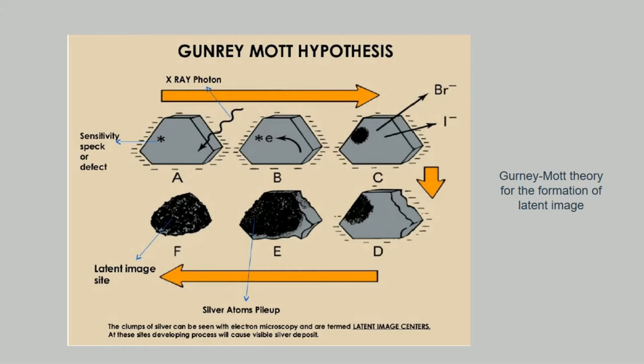C is releasing of the halide ion. Due to the trapped electron at the sensitive spot, a halide ion is released. D is silver ion migration — a positive silver ion is attracted to the spot and is neutralized when combined with the electron. This causes the deposition of black metallic silver. E is repeated photon absorption and silver ion pileup — the process is repeated as more photons reach the grain to cause more silver atoms to be deposited.